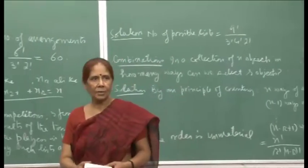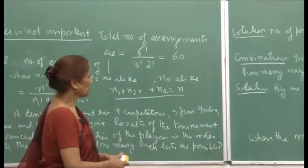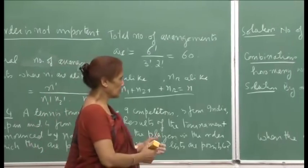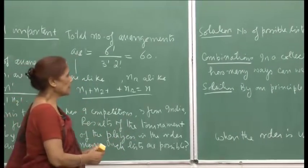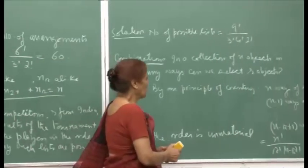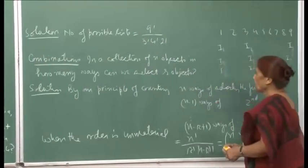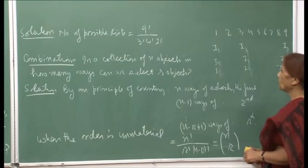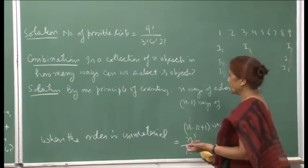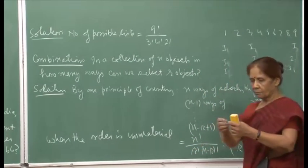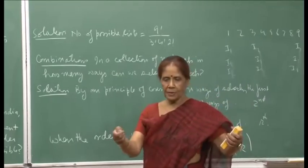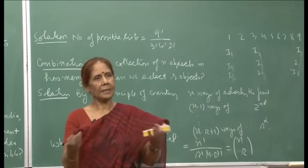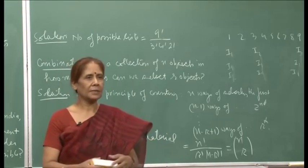Just trying to make the concept of counting clear, so that when you have to compute the possibility of the occurrence of an event, all these things will come in handy. Now, if you have a collection of n objects, in how many ways can we select r objects? You can put the n objects in a row and pick r from them.